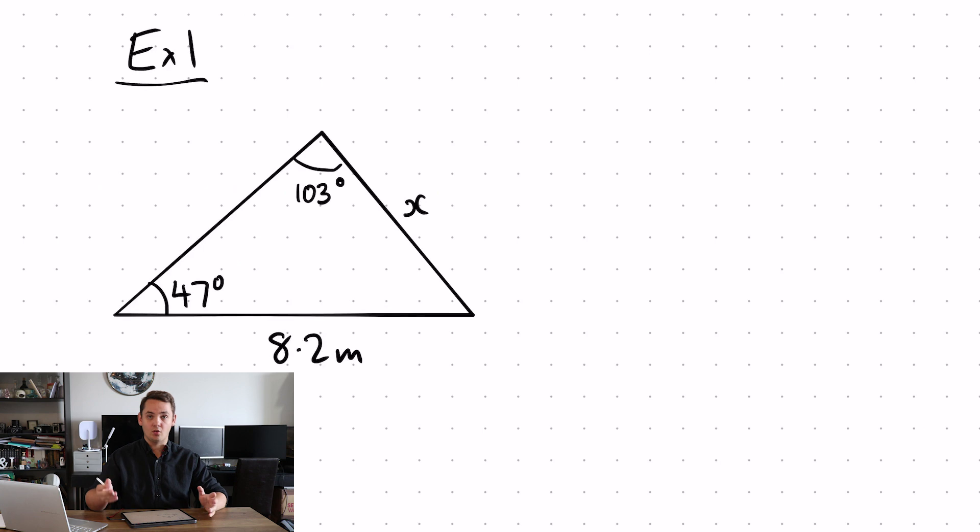First of all we're going to have a look at a question where we've got an unknown side. So first things first, label up your diagram. Always start off by labeling up your diagram. So I like to label my unknown here A, which means that the angle that is opposite is capital A. My other side I call B, which means the angle opposite that is capital B. You don't need C and sine C for this, you only need two pairs of opposite sides and angles.